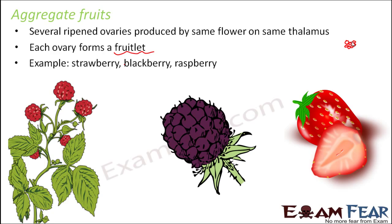In aggregate fruits, each individual ripened ovary can itself be a drupe, a dry fruit, or a simple fleshy fruit. Each ovary can form a simple fleshy fruit, a drupe, a pome, or anything else. When all these fruitlets combine together to form a single fruit, that is known as an aggregate fruit.